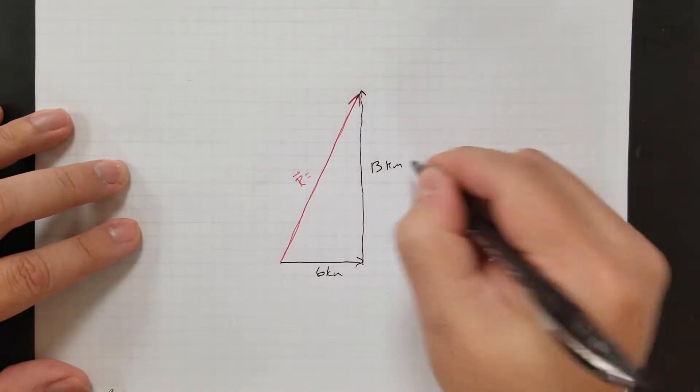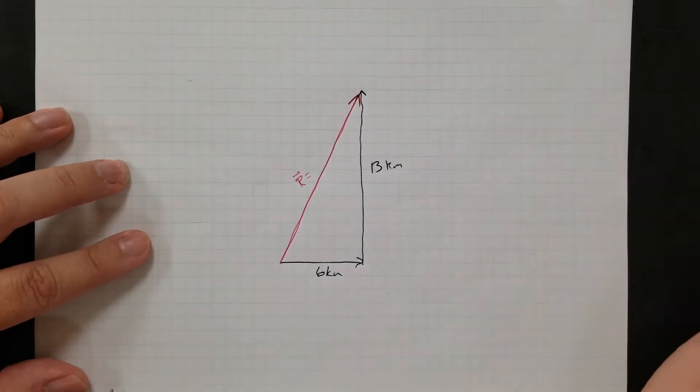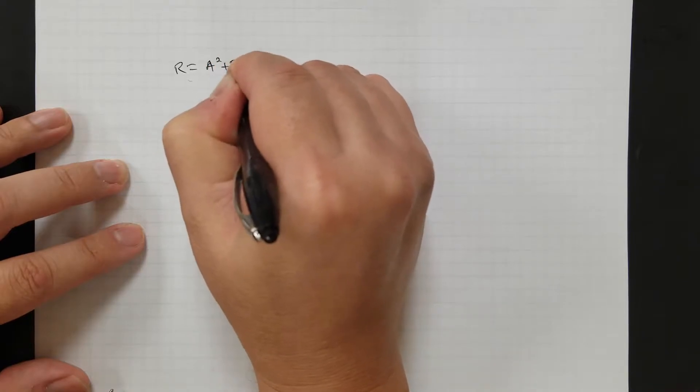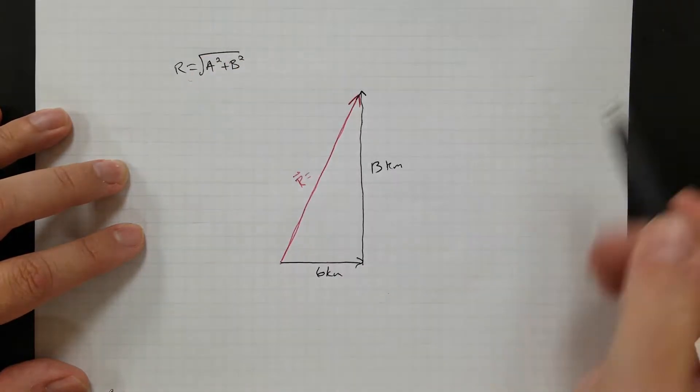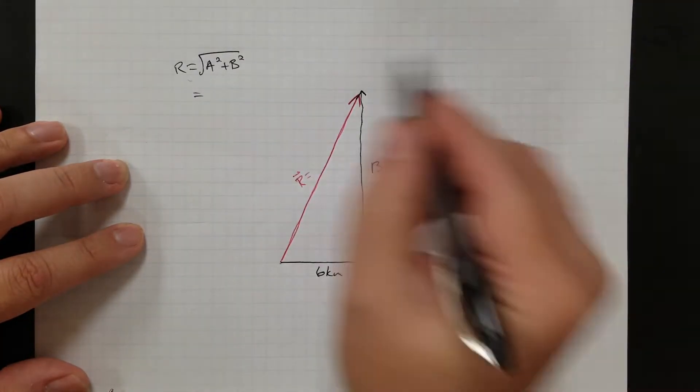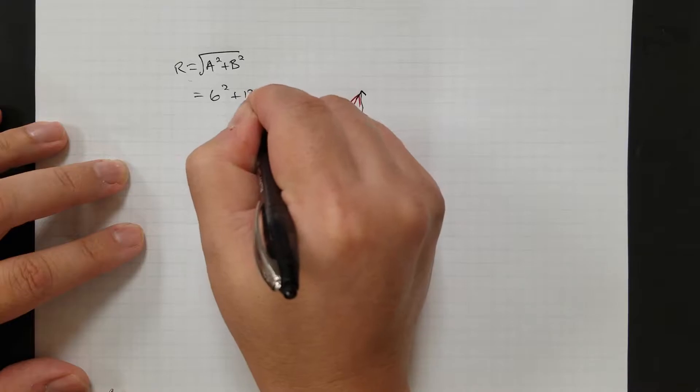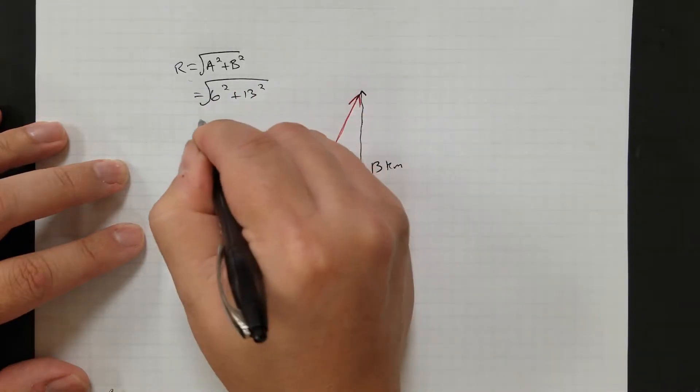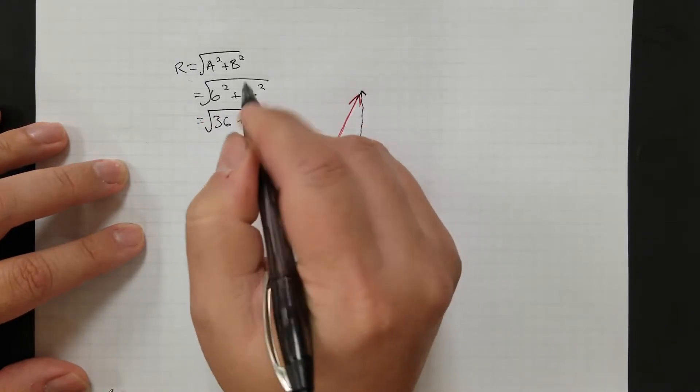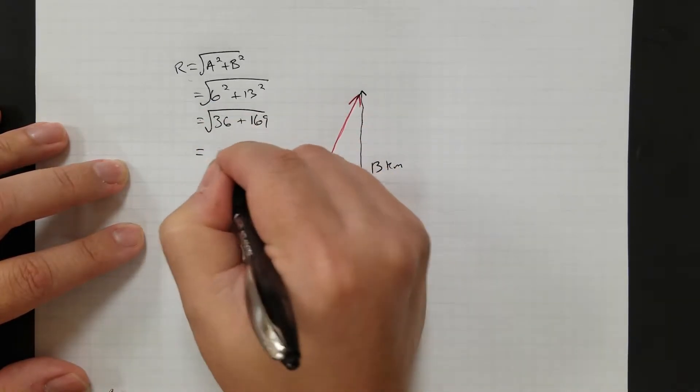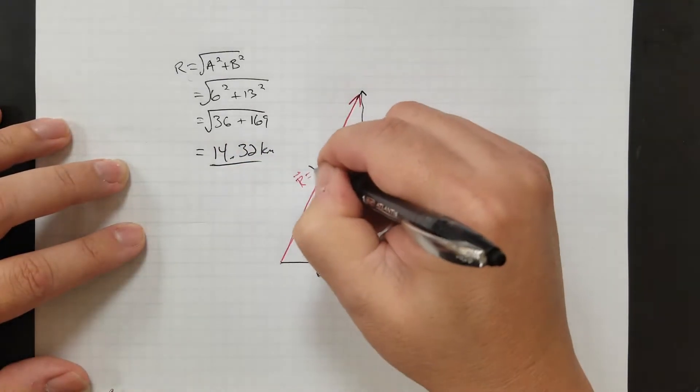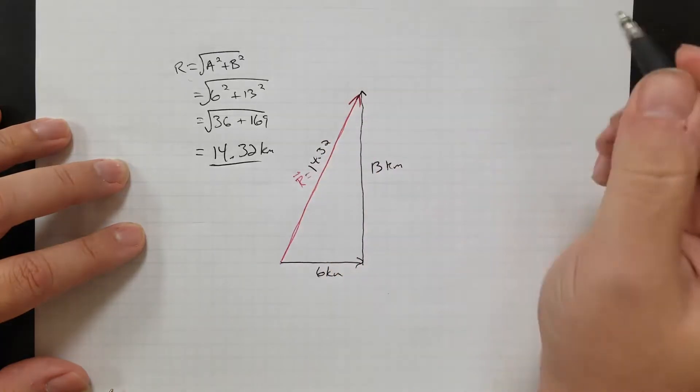Okay, so if I have both of these sides, solving for r is just using the Pythagorean theorem. So r is going to be the square root of a squared plus b squared, because a squared plus b squared equals c squared. So if I plug in, that gives me 6 squared plus 13 squared. So if I do 6 squared and 13 squared, that's 36 plus 169. And so if you do that, it comes out to 14.32 kilometers.